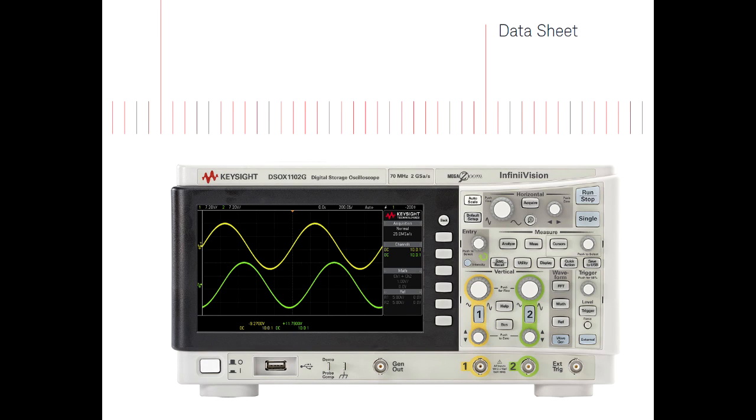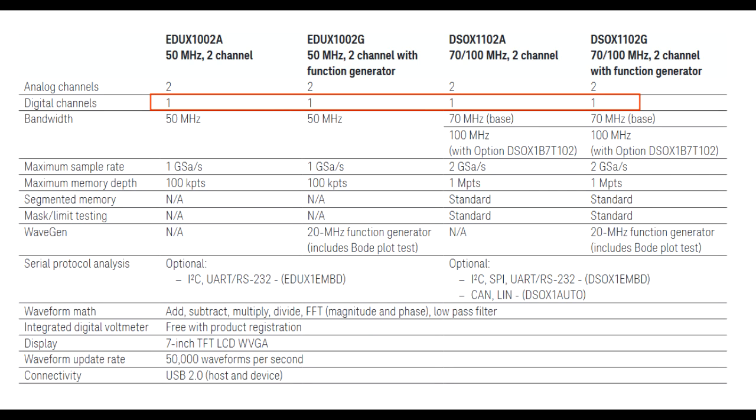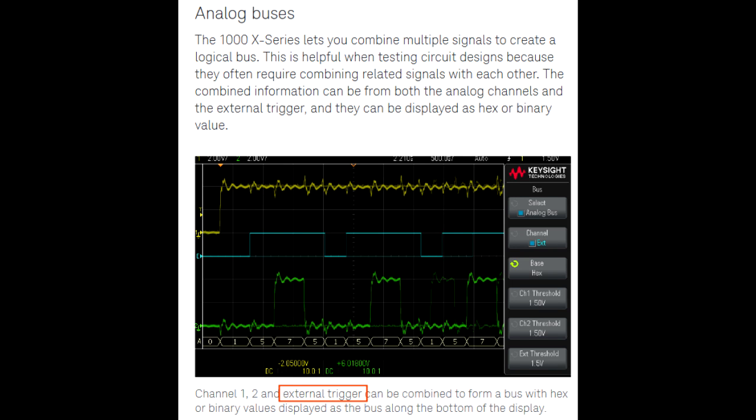If you look at the data sheet, it really isn't clear because it's really only mentioned in two places. If you look at the pages of the general specification table, it does actually show one digital channel. There's literally just one screenshot that shows it.